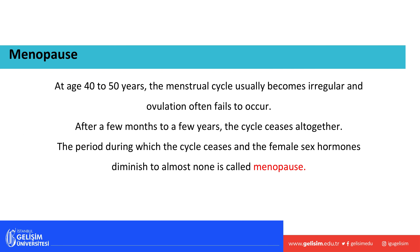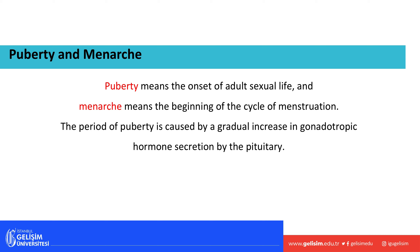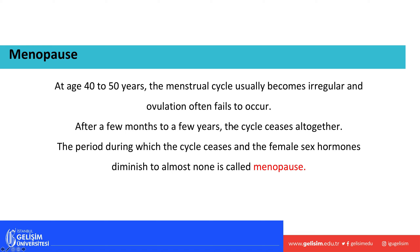Puberty means the onset of adult sexual life — when a male or female is able to reproduce. Males begin producing sperm cells and females begin producing eggs. Menarche refers to the start of the menstrual cycle. Puberty results from an increase in gonadotropic hormones secreted by the pituitary gland.